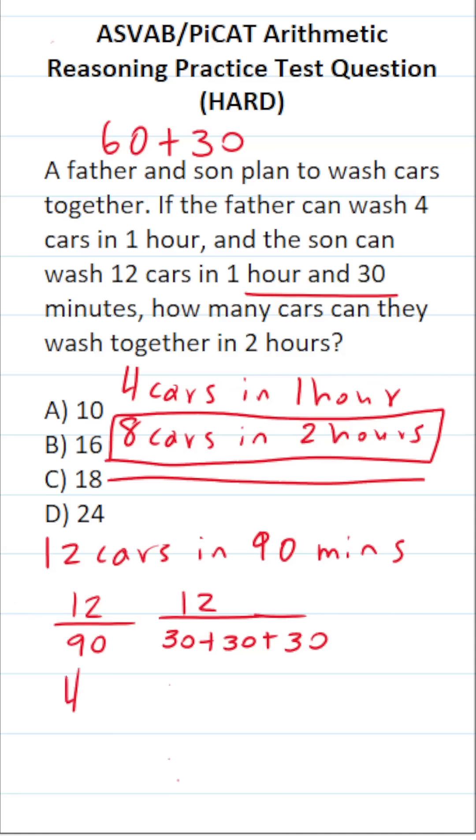That means that over those three 30-minute intervals, he could wash four cars every 30 minutes. And to determine how many cars he can wash in two hours, we would multiply this by four.